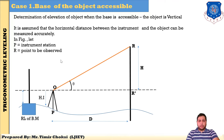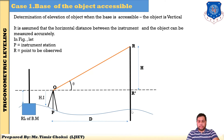So now, here I have explained the derivation of case number 1. First step: draw the figure. Determination of elevation of the object when the base is accessible and the object is vertical. Consider this is our LJ building, and this is the base of the object. It is assumed that the horizontal distance between the instrument and the object can be measured accurately, and this is the plane trigonometric levelling portion, because the distance between instrument and object is very small. So the horizontal distance can be measured accurately with chain or tape.